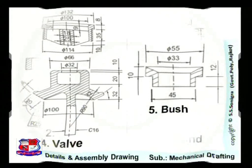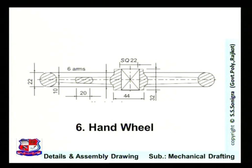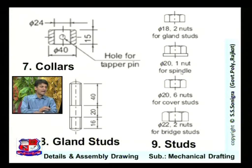Component number four is the valve, and number five is the bush. Number six is the hand wheel, used to rotate the spindle to lift the valve and control the flow of steam — rotated clockwise to increase flow or anticlockwise to reduce it. Number seven is the collar, number eight is the gland studs, and number nine is the studs. Four types of studs are used with varying dimensions: two nuts for gland studs of diameter 18 mm, one nut for a spindle of diameter 20 mm, six nuts for cover studs of diameter 20 mm, and two nuts for bridge studs of diameter 22 mm.